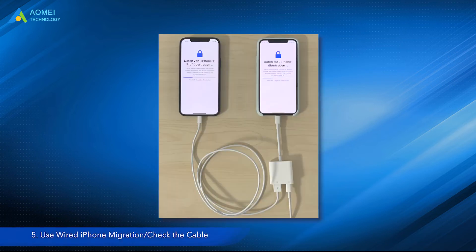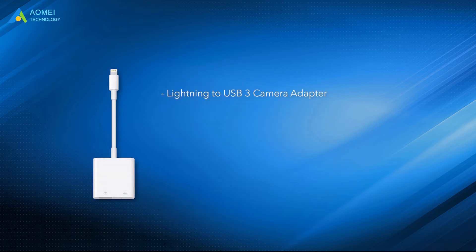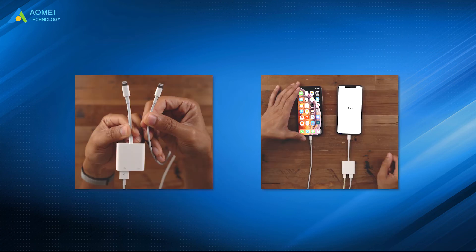Solution 5: Use wired iPhone migration and check the cable. The wireless connection might not be stable between the two devices, so you need to try a wired migration. Use a Lightning to USB 3 camera adapter and a Lightning to USB cable to connect both iPhones, then try transferring data again. Please make sure the cable is working well and has no physical damage.